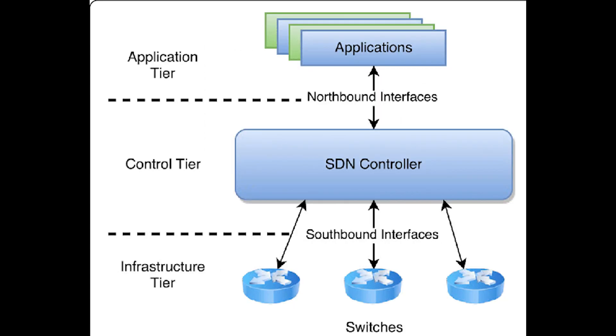Let's take a layer view. Software defined networking has three layer structures. Starting from the top, we have the application, control, and then the infrastructure layer.